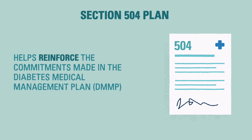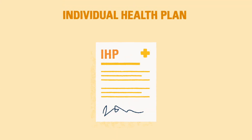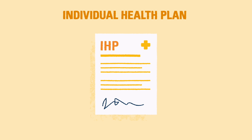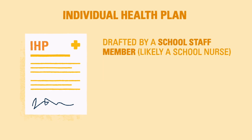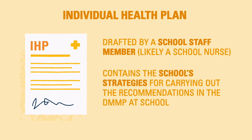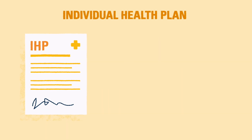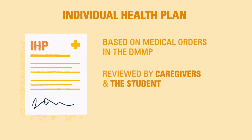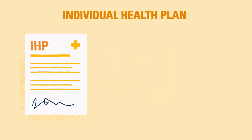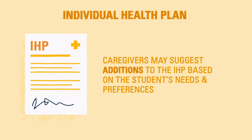One of the school staff members responsible for taking care of the student's diabetes, or the school nurse, may draft a document called an Individual Health Plan, or IHP, for your student based on the material the diabetes care team gives them. An IHP contains the school's strategies for carrying out the medical recommendations in the DMMP in the school setting. The school staff member prepares the IHP based on medical orders in the DMMP and reviews it with caregivers and the student. Caregivers can suggest additions to the IHP based on the student's individual diabetes care needs and preferences.